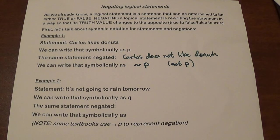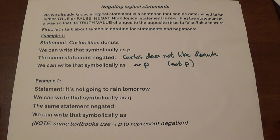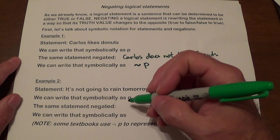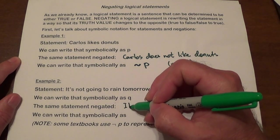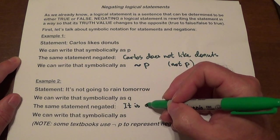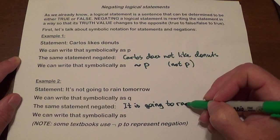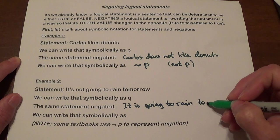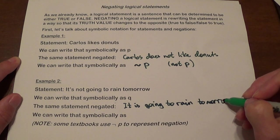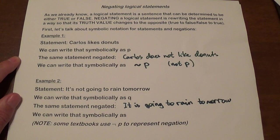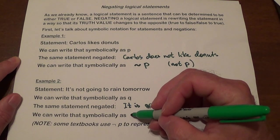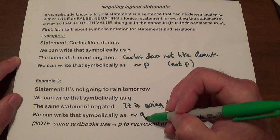Our next example: it's not going to rain tomorrow. We write it symbolically as Q. If our statement is it's not going to rain tomorrow, the negated statement is going to be: it is going to rain tomorrow. And symbolically, it is going to be written as tilde Q — so not Q.